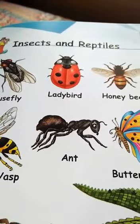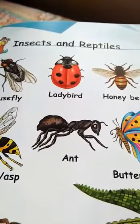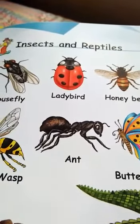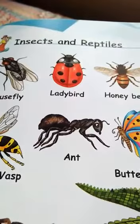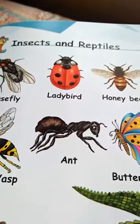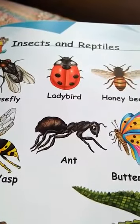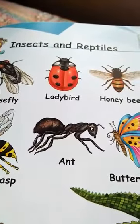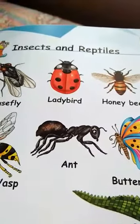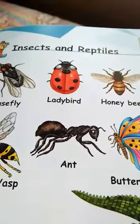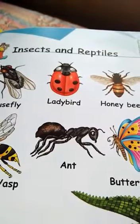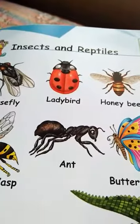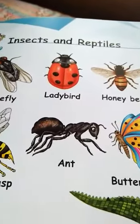Reptiles have long bodies and very powerful jaws. They crawl on the ground. Snake is a reptile. Snakes slide on the ground as they have no legs.